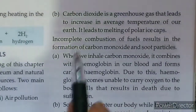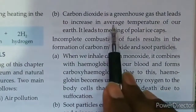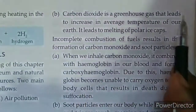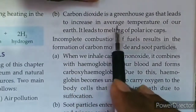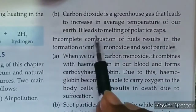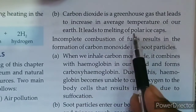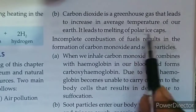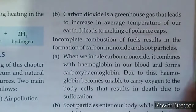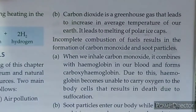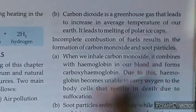Carbon dioxide एक greenhouse gas है that leads to an increase in the average temperature of our Earth. It leads to the melting of polar ice — जो poles होते हैं वहाँ की ice को melt करेगा। अगर temperature बढ़ेगा तो polar ice melt होगी, water level increases, और बहुत सारी चीज़ें पानी में खतम हो जाएंगी।